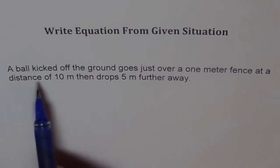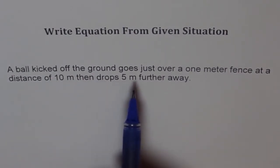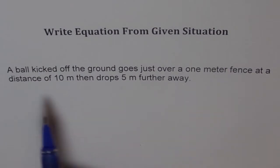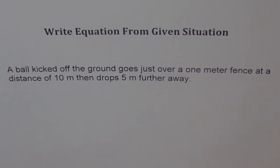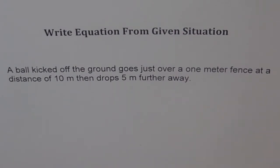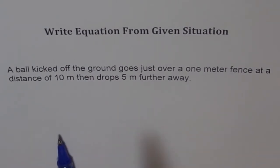A ball kicked off the ground goes just over a 1 meter fence at a distance of 10 meters, then drops 5 meters further away. So that's the problem and we need to find an equation to represent the ball's height above the ground. So read the problem once again.